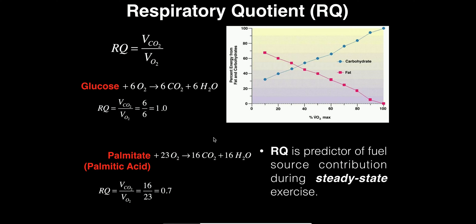In all reality, the respiratory quotients we're actually going to measure in a lab are going to be somewhere between 1.0 and 0.7. Why 0.7? This number comes from fatty acid metabolism. Forget carbohydrates for a second — we're only going to look at fatty acid metabolism. Let's play the same game we did with glucose and look at cell respiration for a fatty acid.